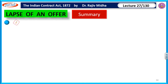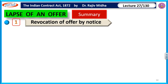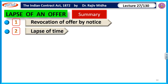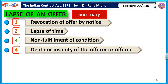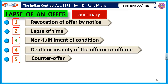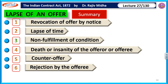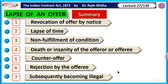Let us summarize all these points. The first one is revocation of offer by notice. The second one is by lapse of time. The third one is by non-fulfillment of condition. The fourth one is by death or insanity of the offerer or offeree. The fifth point is by counter offer. The sixth point is by rejection by the offeree. And the last point is subsequently becoming illegal. In all these cases the offer will be considered as lapsed. I hope that lapse of an offer is now very easy for you. Thank you very much.